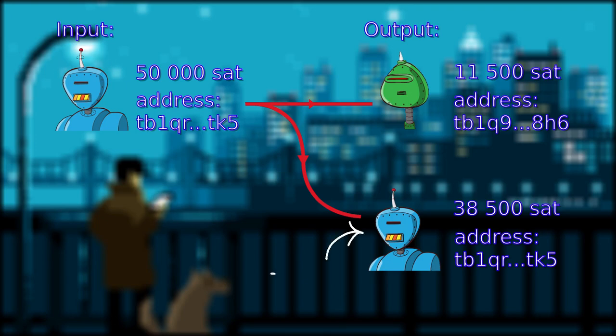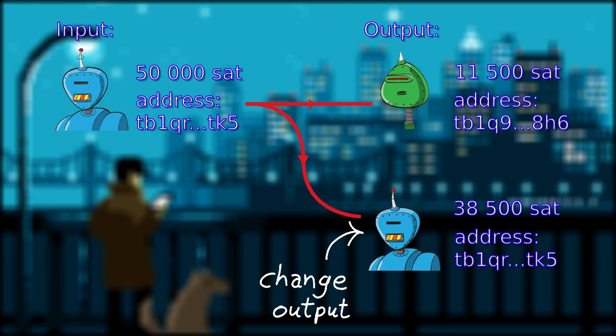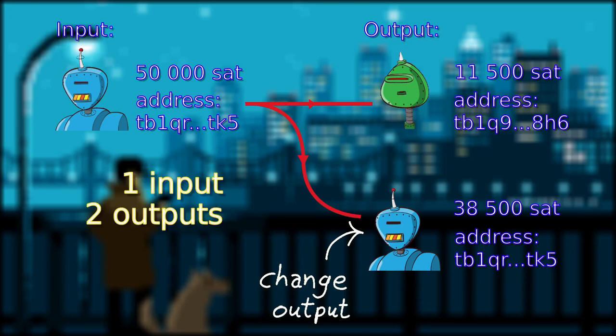And send 38.5k sat back to himself as change in the second output. This change here is known as change output. This is a simple spend transaction, which consists of one input and two outputs.